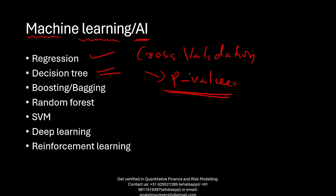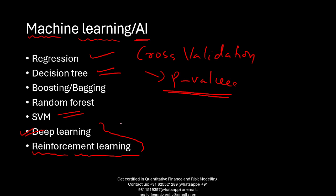Beyond tree-based models, you also have support vector machines. If you want to go further, you can explore deep learning. Reinforcement learning is gaining some popularity in portfolio management, investment, and trading areas. If you really want to be a quant in 2024–2025, you must learn machine learning. Twenty years ago that wasn't the case, but now it's essential. Knowing advanced machine learning like deep learning and reinforcement learning is a real plus on your CV.